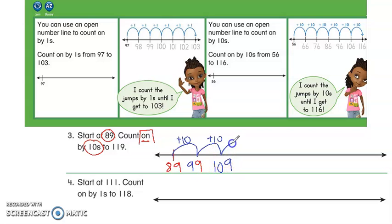So it will be 109. Right? And then again, plus 10. You're going to get all the way to 119.